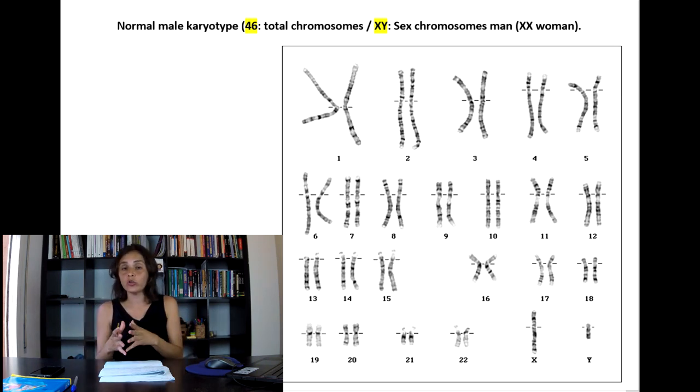46 chromosomes are normal in humans. XY are the sex chromosomes for men. This means that the somatic cells of a human being contain 46 chromosomes. And in Down syndrome, we observe an alteration in the pair 21.